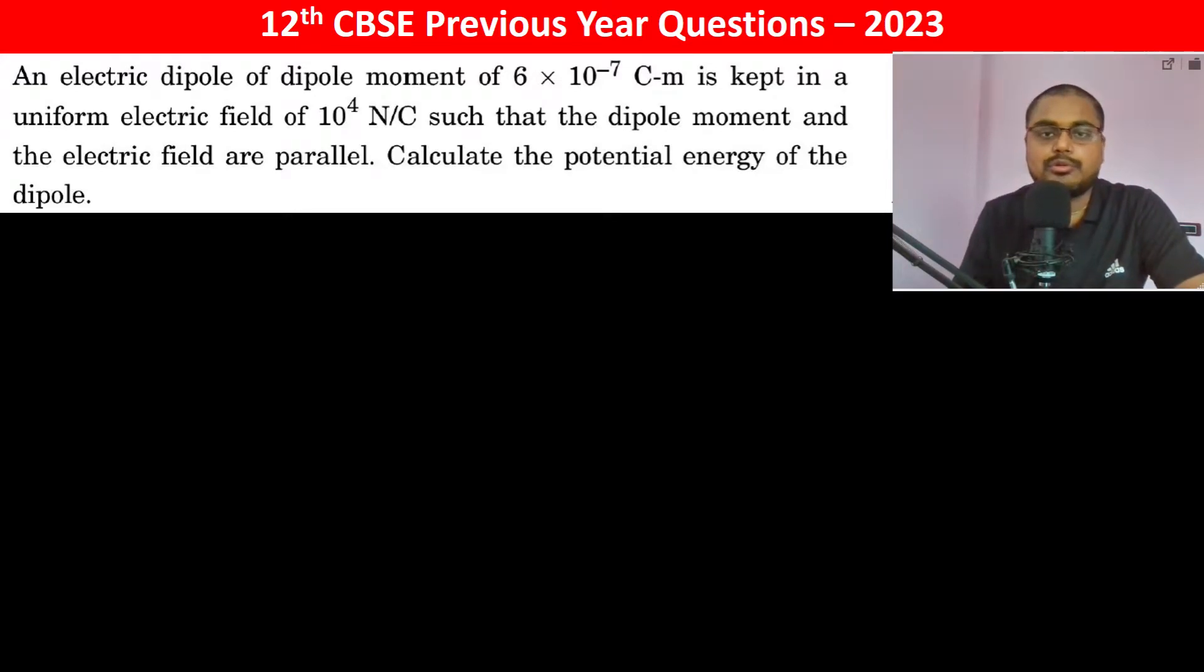An electric dipole of dipole moment, Q into D, that is P electric dipole is Q into D. This is 6 into 10 to the power minus 7 coulomb meter. It is kept in a uniform electric field, electric field is 10 to the power 4 Newton per coulomb, such that the dipole moment and the electric field are parallel.